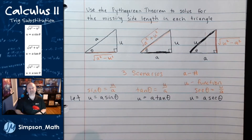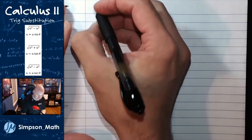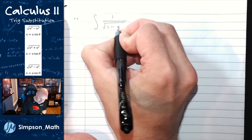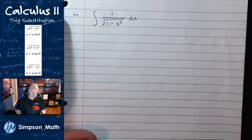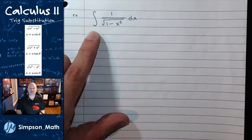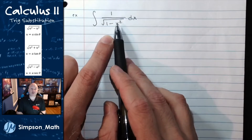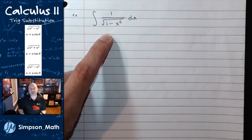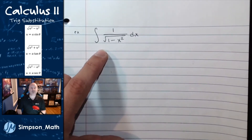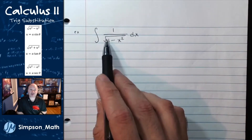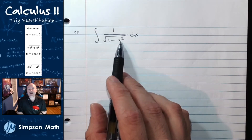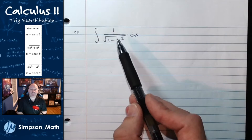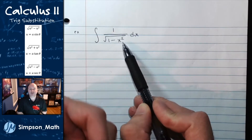Let's get started with an example — I'm going to start with something we already know the answer to. Let's do the integration of 1 over the square root of 1 minus x squared dx. We know this is one of our derivative and integration rules — the answer is simply arc sine. But I'd like to show you using trig substitution how we can confirm that answer. We recognize the square root, and a number minus a function squared: a is 1, u is x.